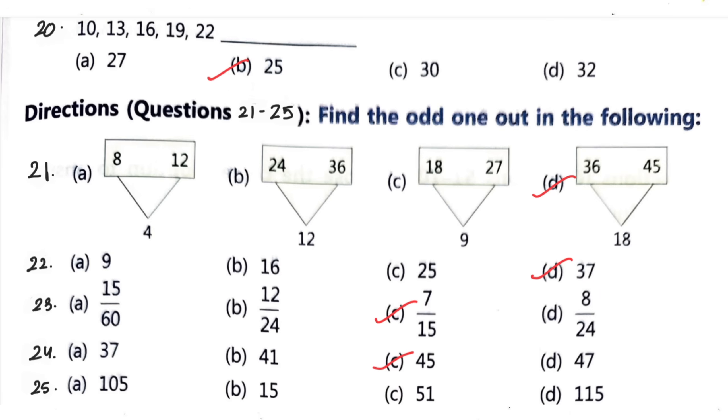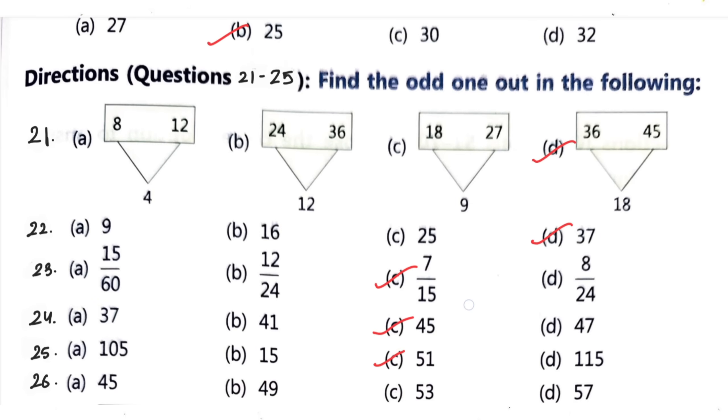Question number 25: 105, 15, 51, 115. Out of all four, odd one out is 51. Next question number 26: 45, 49, 53, 57. Out of this, odd one out is 53.